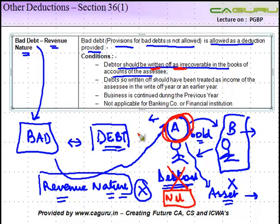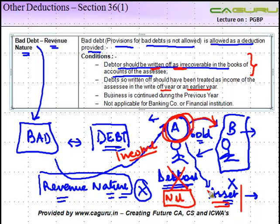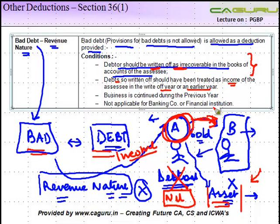There has been a lot of debate and controversy around this. Debts so written off should have been treated as income of the assessee in the write-off year or an earlier year. When you sell the goods, you book this amount as income, whereas when you sell an asset below the price at which it stands in your books, it is not shown as income but as a capital receipt. So in order to claim a bad debt, the debt written off should have been treated as income of the assessee. The idea is that there was an amount which you treated as income in some earlier year when you sold goods to B, but because you did not receive it — even though you might have paid tax in that year — ultimately you did not receive it, so there was no profit, and therefore the allowance for bad debt.